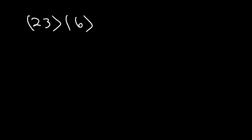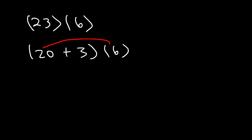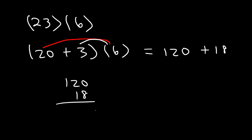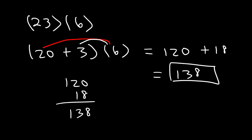Try this one using the distributive property: what is 23 times 6? 23 is basically 20 plus 3. Multiply 6 by 20 first — if you have 6 twenty-dollar bills, that's 120. And 6 times 3 is 18. Add 120 and 18: 8 plus 0 is 8, 2 plus 1 is 3, giving 138. Now you know how to multiply 2 or 3 integers with the same or different signs, using various techniques for multiplication.